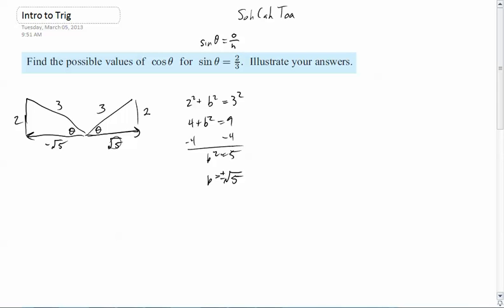Well, for this triangle right here, it's going to be the adjacent over the hypotenuse. That's what cosine of theta is, right? Adjacent over hypotenuse. So cosine of theta equals root five over three.